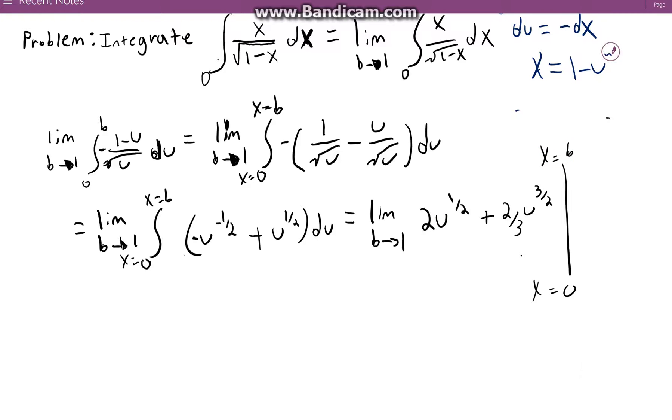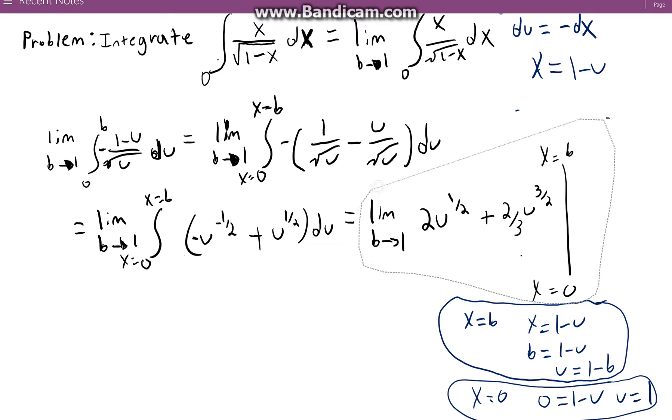So we see when x is equal to b we know that x is equal to 1 minus u. So we can replace x with b and say b is equal to 1 minus u therefore u is equal to 1 minus b. Now we do the same for x is equal to 0. What will u be? Well, 0 is equal to 1 minus u and therefore u is going to be equal to 1.